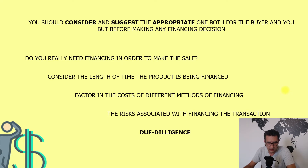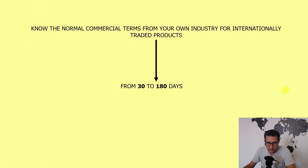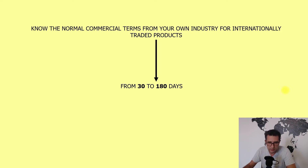An important consideration is the risk associated with financing the transaction. My advice is to always consider the political and economic stability of the buyer's country, coupled with basic due diligence on your partner. A couple hundred dollars spent on a financial report could save you thousands later. Also, know the normal commercial terms in your industry for internationally traded products — buyers usually expect payment terms ranging from 30 to 180 days depending on the industry.